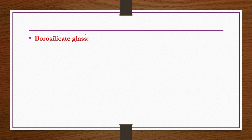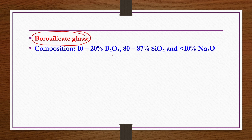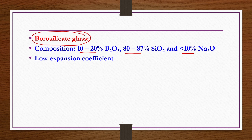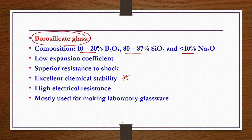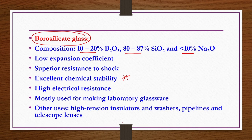Borosilicate glasses are commonly found in laboratories. Composition: boric oxide 10 to 20 percent, silica 80 to 87 percent, and soda less than 10 percent. It has a low expansion coefficient, giving it superior shock resistance, excellent chemical stability, and high electrical resistance. It is mostly used for making laboratory glassware. Other uses include high-tension insulators, washers, pipelines, and telescope lenses.